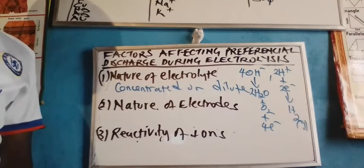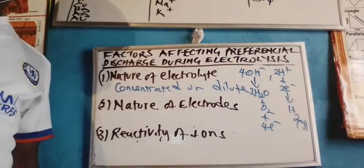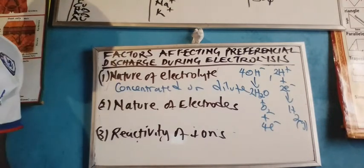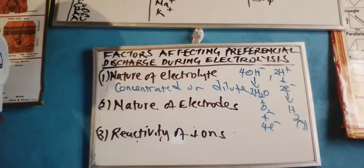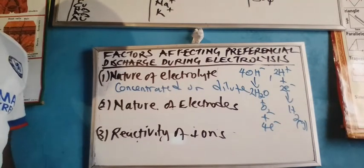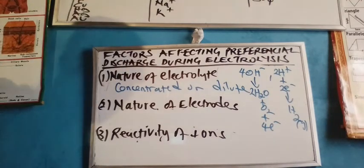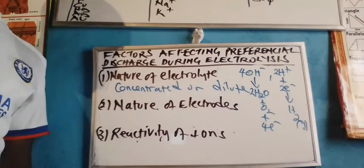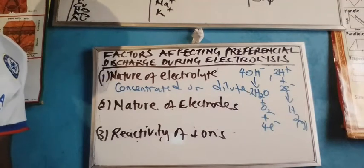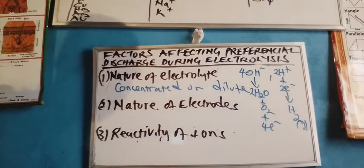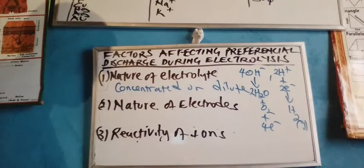We conclude by saying that all dilute solutions undergo electrolysis identical to the electrolysis of water, while all concentrated solutions undergo electrolysis in which the ions present in the electrolyte are the only discharged ions.